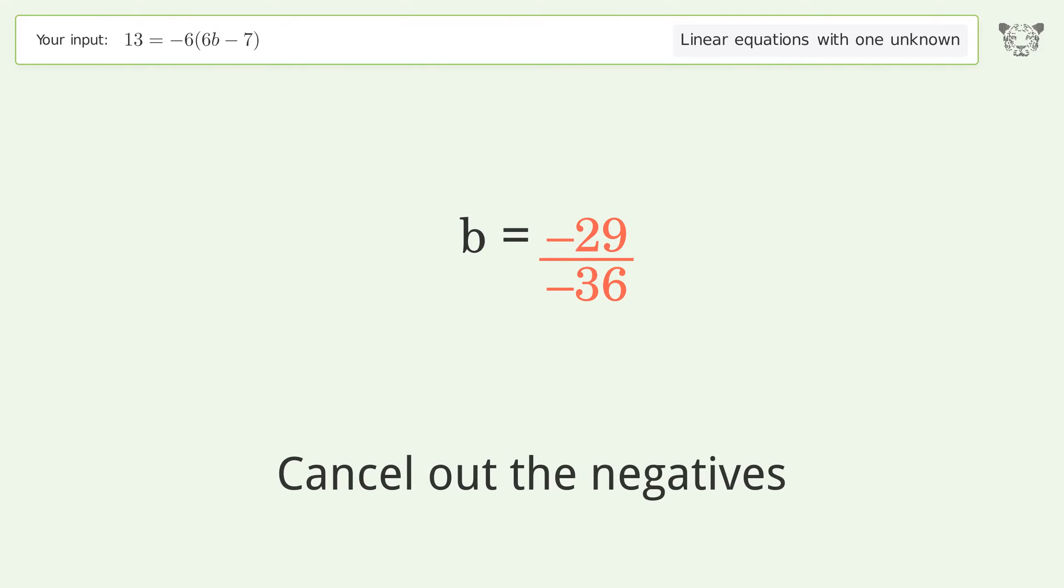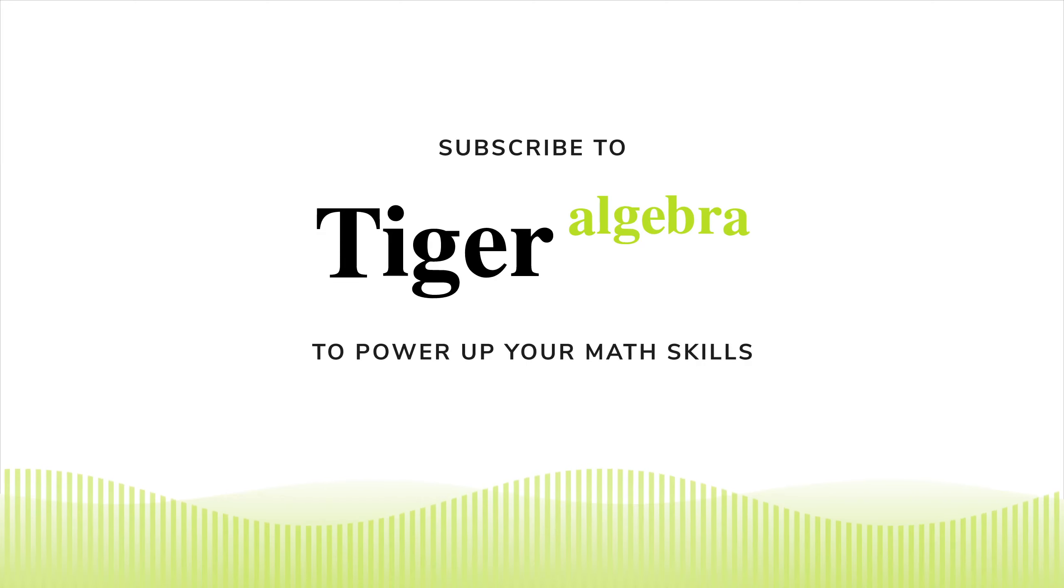Simplify the fraction. Cancel out the negatives. And so the final result is b equals 29 over 36.